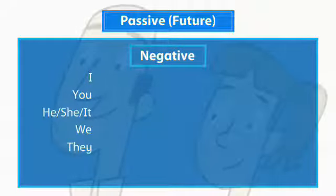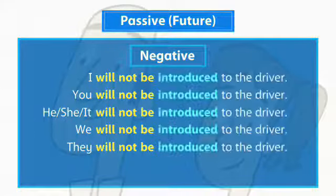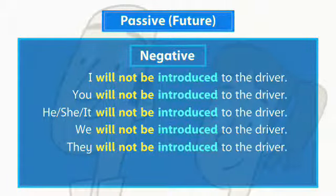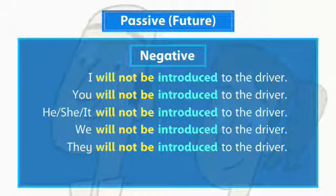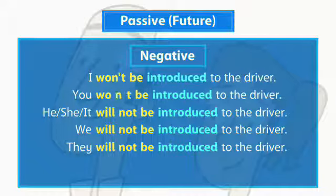We form the future passive negative with 'not'. This is the same for all subjects. We often use the short form 'won't' in spoken conversations.